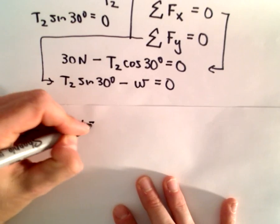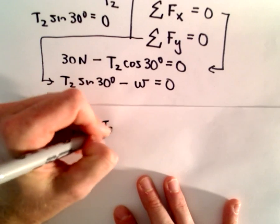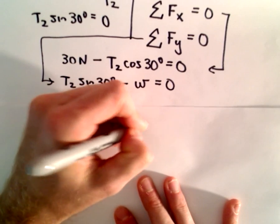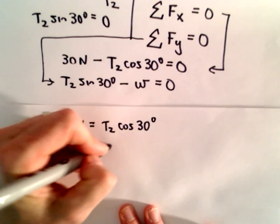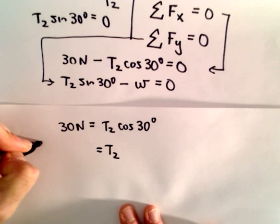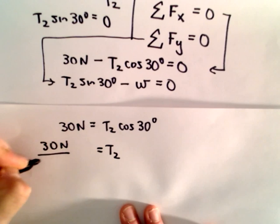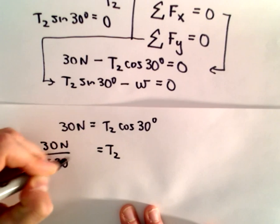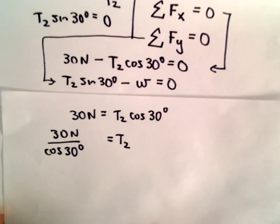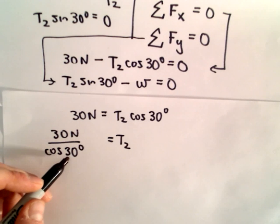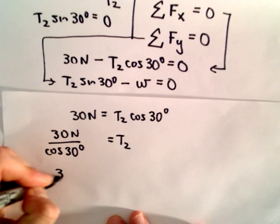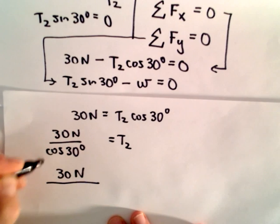So we have 30 newtons, I'm just going to add T2 times cosine of 30 degrees to both sides. And now to get T2, we can just divide both sides by cosine of 30 degrees. Cosine of 30 degrees, 30 degrees is pi over 6, that's one you can get exactly. I'm even just going to go ahead and round it off. Cosine of 30 degrees is roughly 0.866.